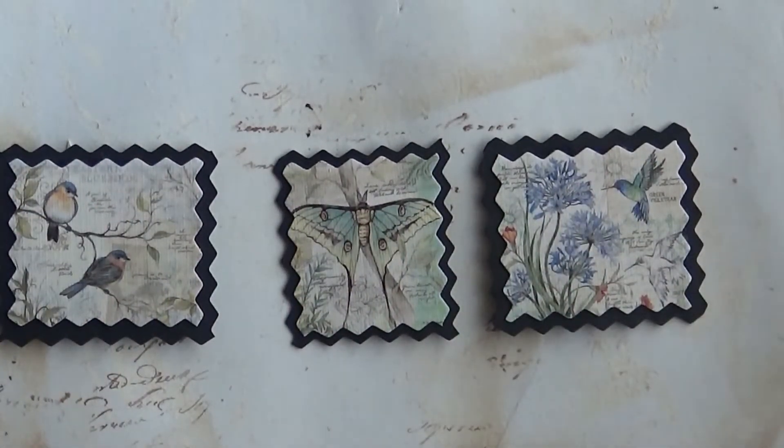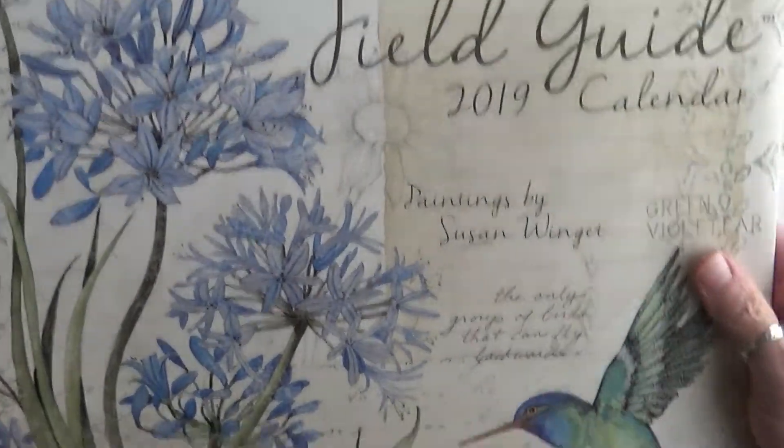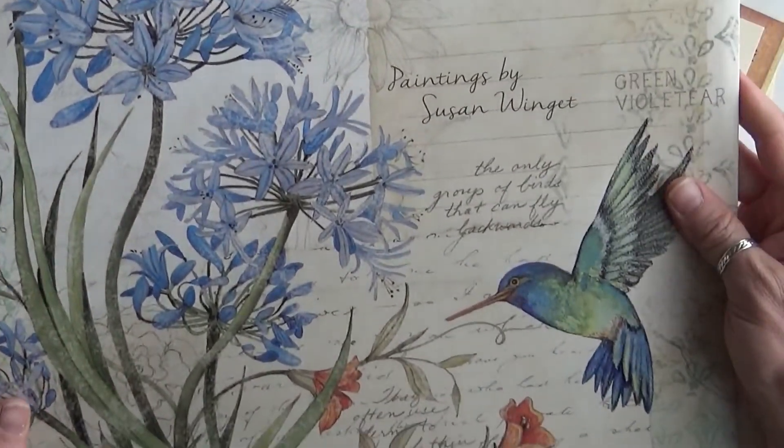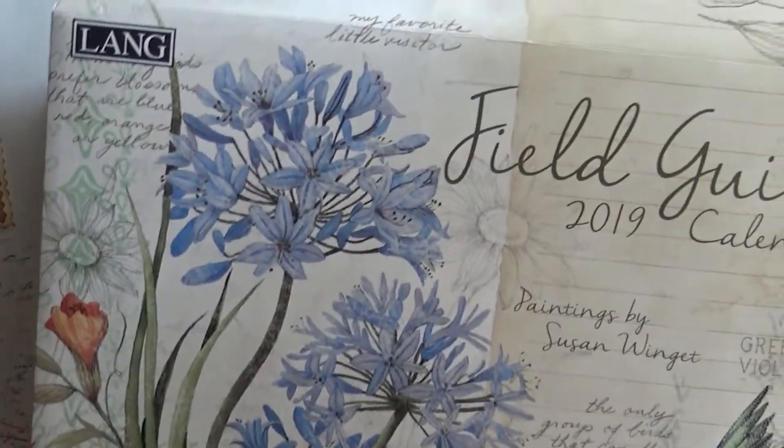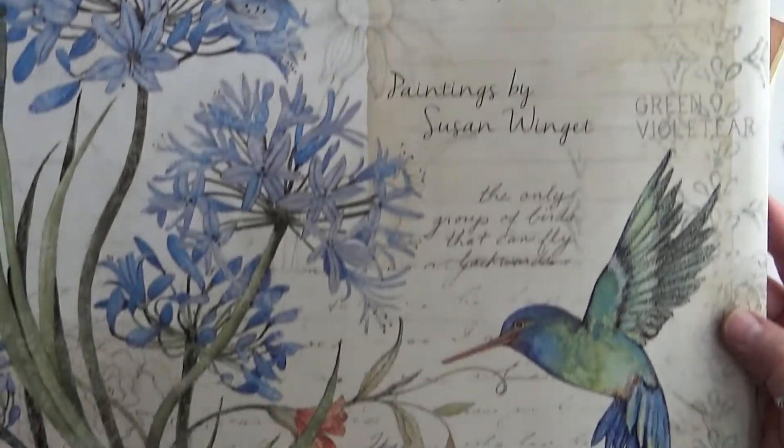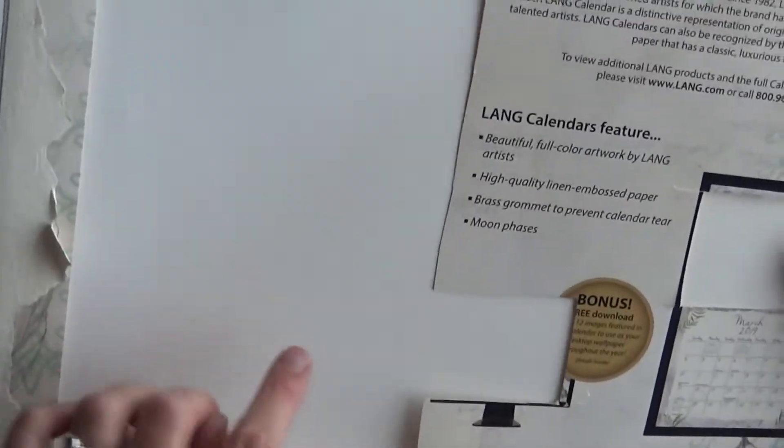This calendar was kind of interesting because I got the calendar and it came in this package, which normally you don't get a big package with it. So here's the front cover - isn't it beautiful? I really love her work. And then here's the back - I just cut all the little tabs for every month, so that's how I got a hold of that.